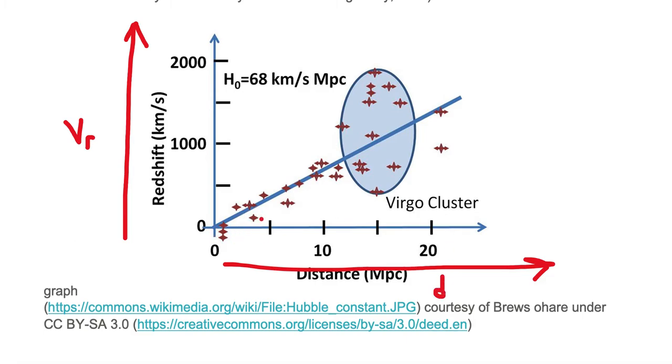We have various different galaxy distances and recessional velocities plotted on this diagram, and notice that we have a blue linear line drawn through the data.